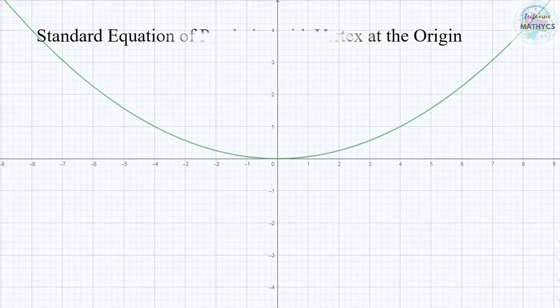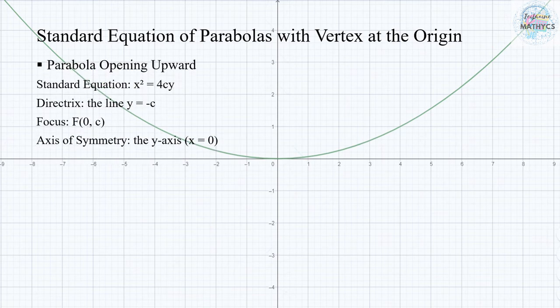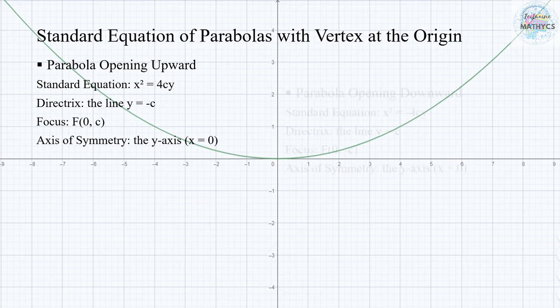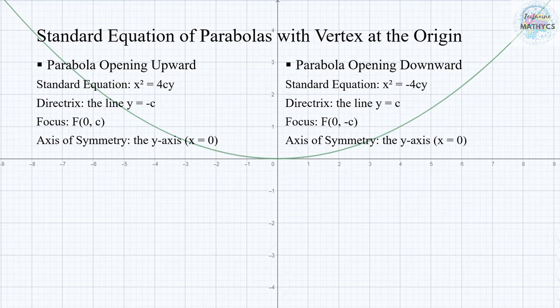These are the standard equations of parabolas with vertex at the origin. A parabola opening upward has an equation of x squared equals 4Cy, with the directrix at line y equals negative C, its focus is at (0, C), and the axis of symmetry is at the y-axis where x equals 0.